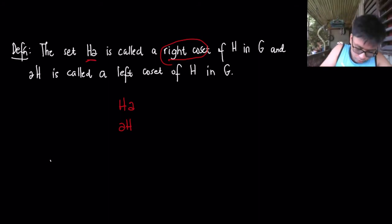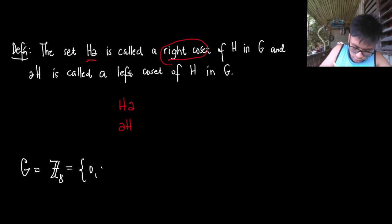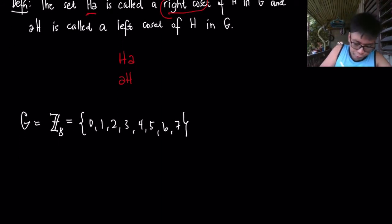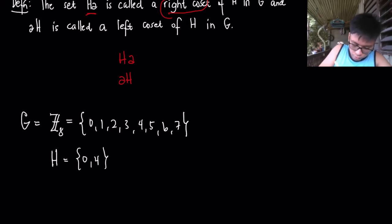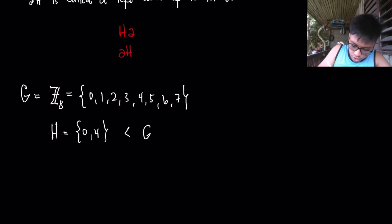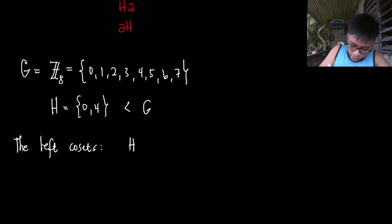Let's consider an example. We have G as Z, and G contains H. Assuming that H is the set containing 0 and 4 — so this is a subgroup of G. Let's consider the left cosets. H itself is automatically a left coset, simply because I can write H as 0 + H.